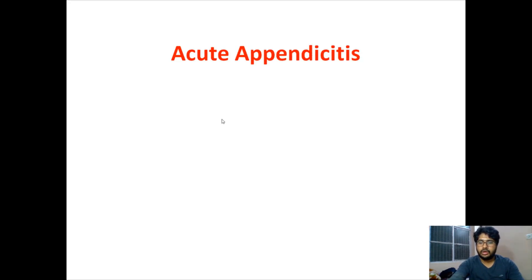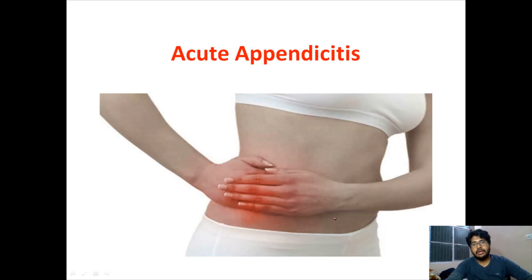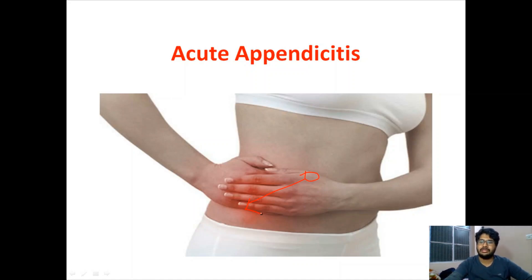Hello guys, today we will study about appendicitis, that is acute appendicitis. The classical symptom is periumbilical or umbilical pain which shifts to the right iliac fossa. This is not present in each and every patient, but this is the classical definition.